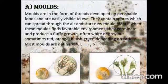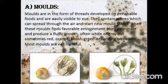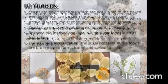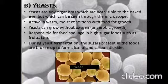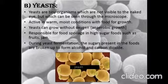Molds are in the form of threads developed on perishable foods and are easily visible to the eye. They appear cottony and spongy, and grow from cells called spores present in the air. Most molds are not harmful. Yeasts are anaerobic microorganisms not visible to the naked eye but seen through a microscope. Yeasts are responsible for food spoilage in high-sugar foods such as fruits, jams, etc. They are also useful microorganisms — used in fermentation to produce cheese, breads, alcoholic beverages, etc.